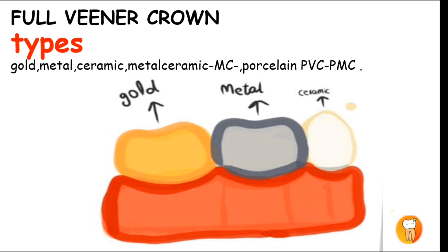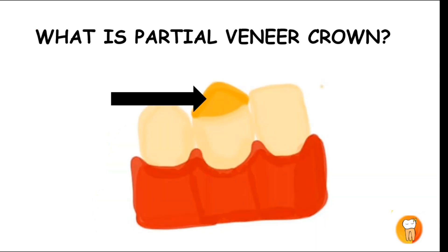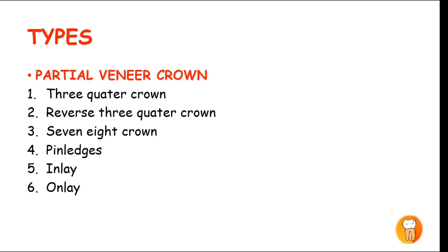A partial veneer crown covers only part of the prepared tooth, not all surfaces. A tooth has five surfaces, and a partial veneer crown may cover three or four of them, which can include the occlusal, labial, lingual, distal, and mesial surfaces. Partial veneer crowns have seven types.